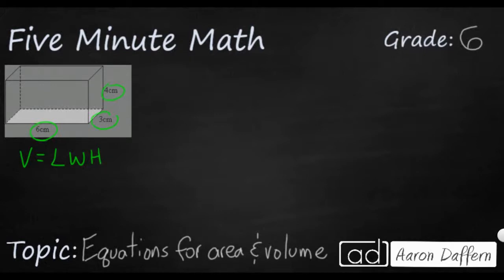So volume is going to equal 6 times 3 times 4. You can multiply these in any order you want to. I'm going to multiply those two real quick and say V equals 6 times 12. So that's going to equal 72.